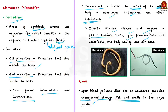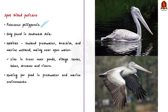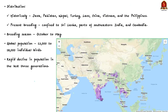A few facts about spot-billed pelicans from an exam perspective: the scientific name is Pelecanus philippensis. This species can only be found in Southeast Asia. It lives in lowland fresh water, brackish water, and marine wetland areas, mainly near open water. Spot-billed pelicans live in trees near water bodies such as ponds, village tanks, lakes, streams, and rivers, and hunt in both freshwater and marine environments. Historically cited across Southeast Asia — Java, Pakistan, Nepal, Turkey, Laos, China, Vietnam, and the Philippines.